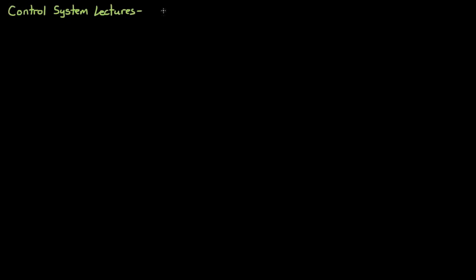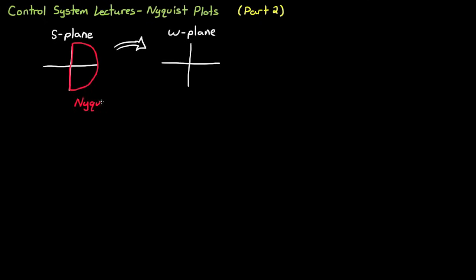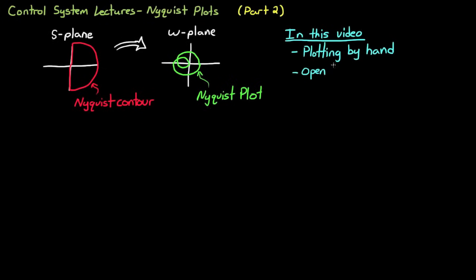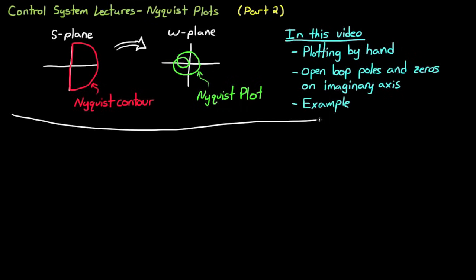Welcome back to Control System Lectures. This is part two of our explanation of the Nyquist plot. In the first part, I showed you the method of mapping from the s domain to the w domain using the transfer function, explained how to use Cauchy's argument principle, what the Nyquist contour was, and how to interpret the resulting Nyquist plot. Now let me continue from there. In this video I'm going to show you a simple way to estimate a Nyquist plot by hand, explain how to handle open-loop poles and zeros on the imaginary axis, and walk through an example that illustrates the power of the Nyquist plot over similar methods like the Bode plot.